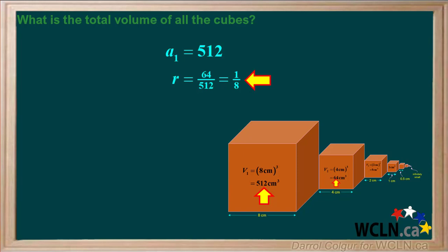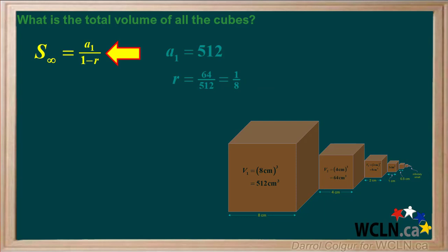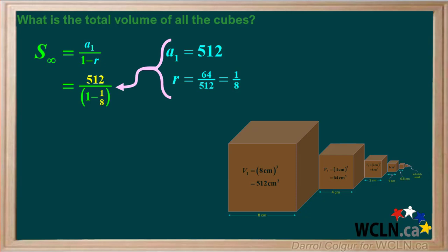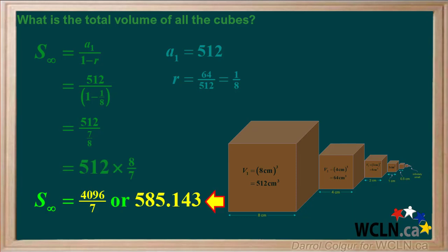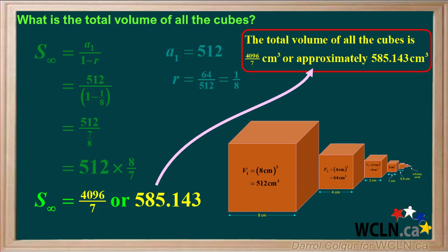Because R is between 0 and positive 1, this is a convergent series. We'll start with the equation for the sum of a convergent infinite geometric series, and substitute 512 for A1 and 1/8 for R. 1 minus 1/8 is 7/8. 512 over 7/8 is the same as 512 times 8 over 7, which equals 4096 over 7, or approximately 585.143. So the total volume of all the cubes is 4096/7 cm³, or approximately 585.143 cm³.